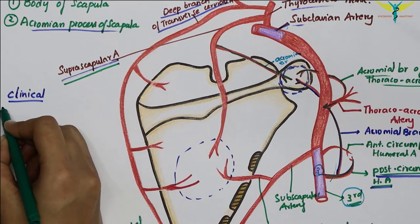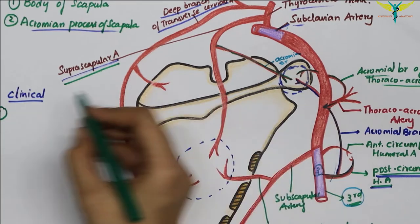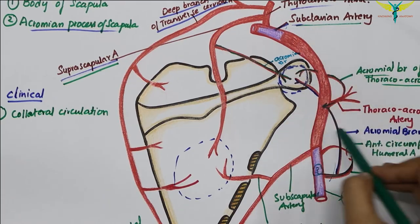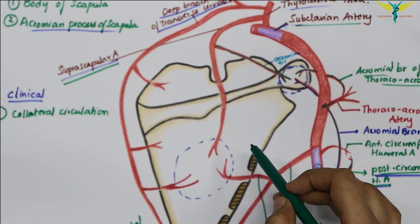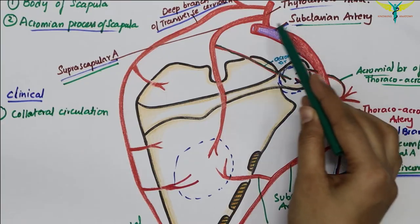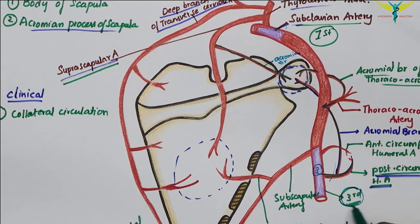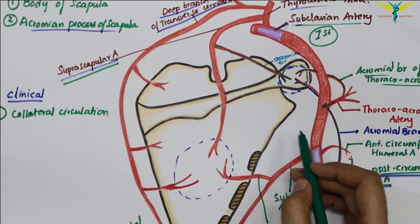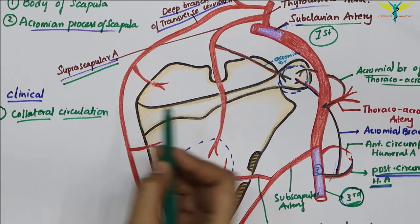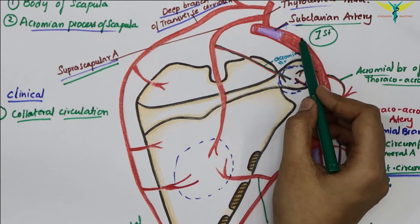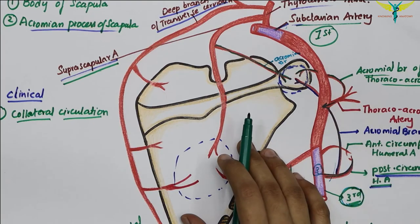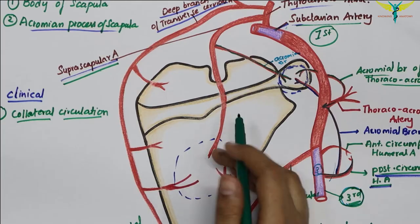The clinical correlation of this anastomosis is the collateral circulation through the scapular anastomosis. This occurs when the subclavian and axillary arteries are blocked — that is, between the first part of the subclavian artery and the third part of the axillary artery. The scapular anastomosis serves as a potential pathway, providing collateral circulation between the first part of the subclavian artery and the third part of the axillary artery, ensuring adequate circulation for the upper limb.